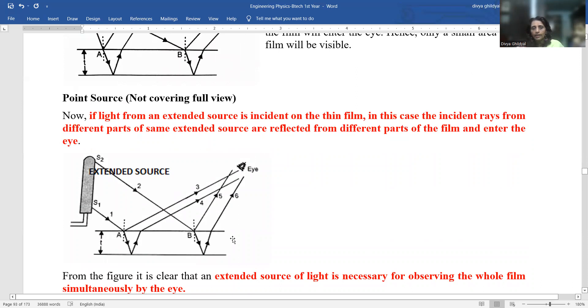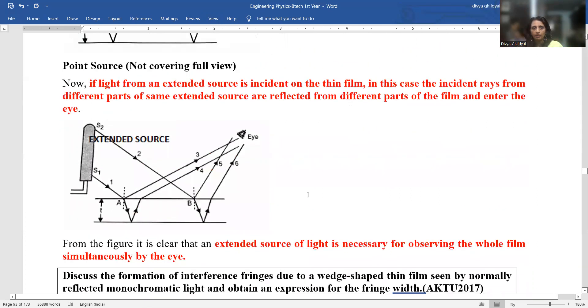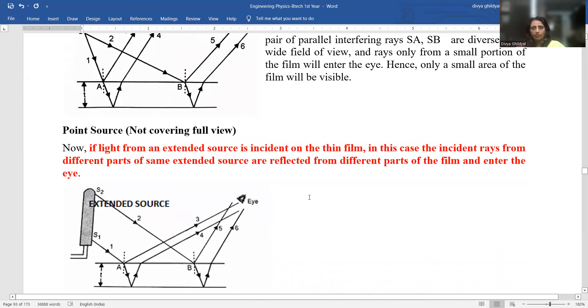my whole thin film will get covered and I will see a lovely pattern, full pattern on the screen. See, if light from an extended source is incident on the thin film, then the incident rays from the same part of extended source are reflected from the different parts of the film and they enter the eye.